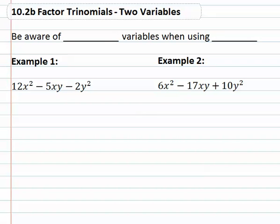When factoring trinomials, sometimes we come across problems that have two variables in them. We must be aware of the multiple variables when we use the reverse FOIL process, and just account for those variables as we go through the same exact steps.